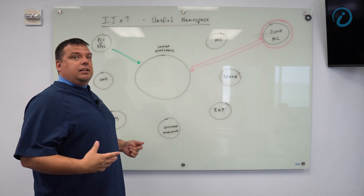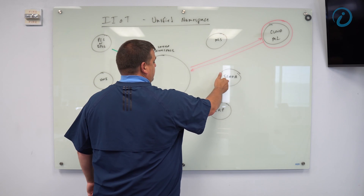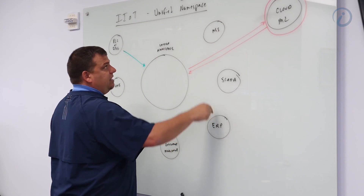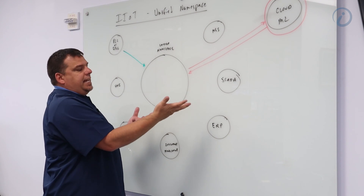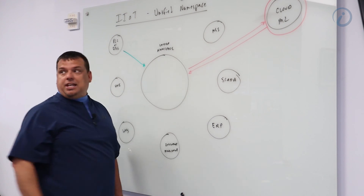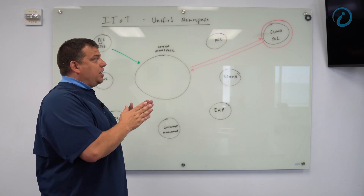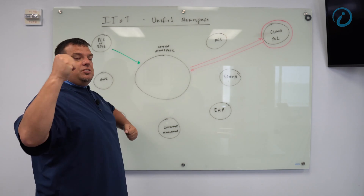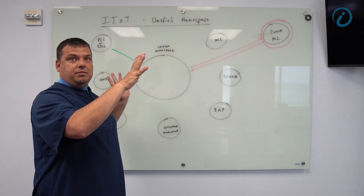If at some point I wanted to get information from the ERP system into the SCADA system, I would have to do two things: connect the ERP system to the MES system for whatever specific new data the SCADA system wanted, and then map it from the MES system to the SCADA system. What ends up happening is as my organization grows, I end up having thousands, tens of thousands, hundreds of thousands of connections between various nodes in my system.